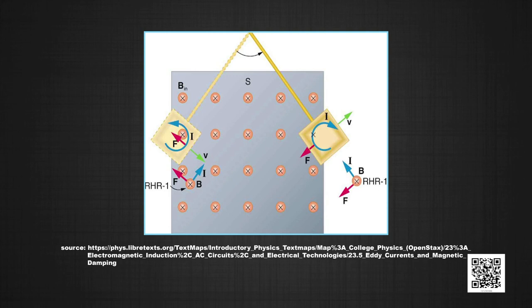Let me explain the damping. As the sheet enters the field from the left, the flux linked with the sheet increases and the eddy currents are developed in the anti-clockwise direction. This sheet experiences a force in the left direction which tends to slow it down. Once the copper sheet is inside the field, the flux associated with it is constant. Now as it moves out of the field from the right direction the flux decreases. Eddy currents are induced in the clockwise direction and the sheet experiences a force in the left direction which again slows it down. Thus eddy currents produce a dampening effect on the motion of the sheet and finally bring it to a stop.